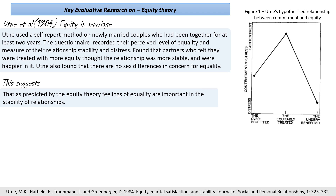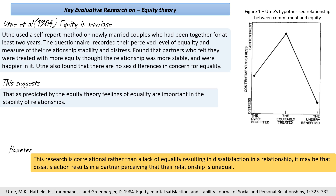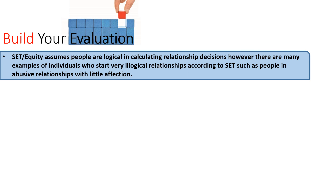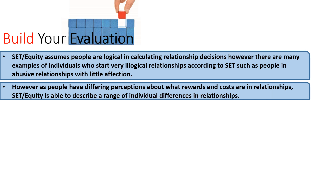A major problem with this research is that it's correlational. Rather than a lack of equality causing dissatisfaction, it could be the other way around — people feel dissatisfied and then look for justifications that their relationship is unequal. For additional evaluation: social exchange theory and equity theory assume people are very logical in calculating relationship decisions, yet there are many illogical relationships that don't fit this model — for example, people in very abusive relationships. One advantage is that both theories are flexible, adapting to what individuals think are costs, benefits, or equality, thus accounting for individual differences.